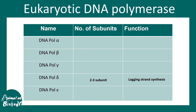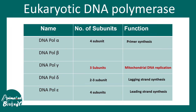In eukaryotes, DNA Pol delta and epsilon are the major polymerases. Pol delta is associated with lagging strand synthesis whereas Pol epsilon is associated with leading strand synthesis. There are other variants — Pol alpha, beta, gamma, theta, mu, kappa, and many more. Pol gamma is a three-subunit complex required for mitochondrial DNA replication. Pol alpha is important for primer synthesis as it has primase activity, and Pol beta is important for base excision repair.